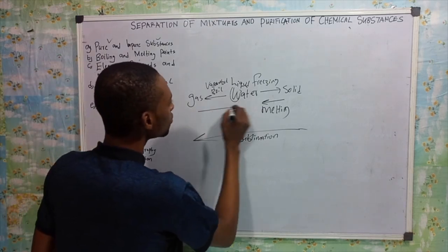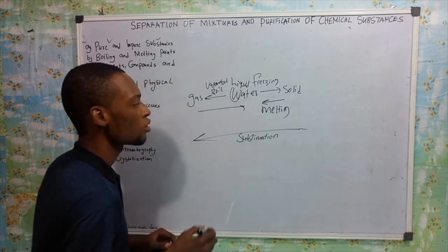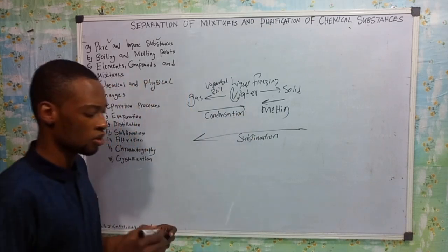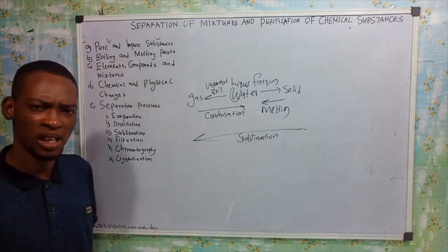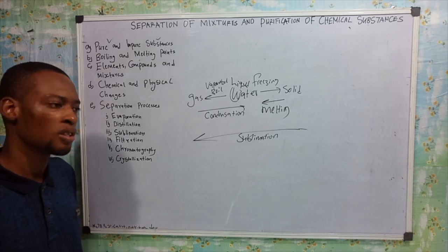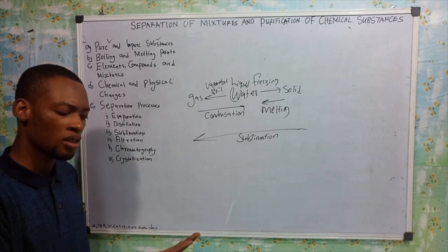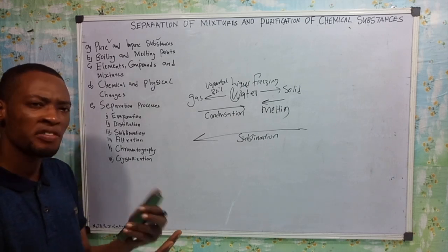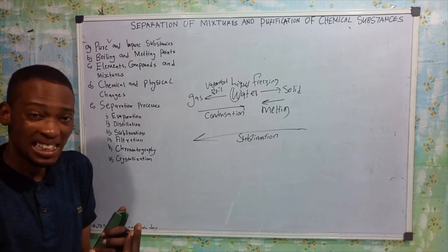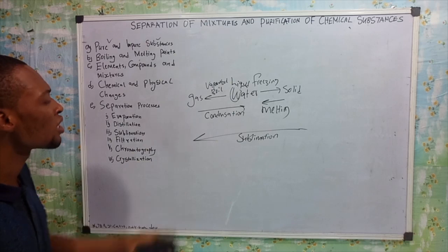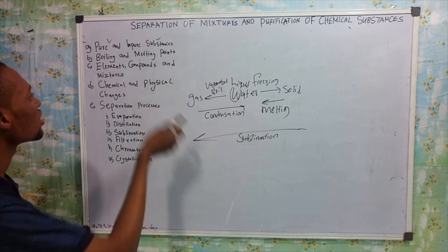Gas can also change to liquid — that's what we call condensation. For example, go close to boiling water and put your hand on the vapor, then remove your hand. The vapor will begin to condense and change to liquid — that's condensation. So our point of focus here is boiling and melting. Water boils, then it changes to gas.